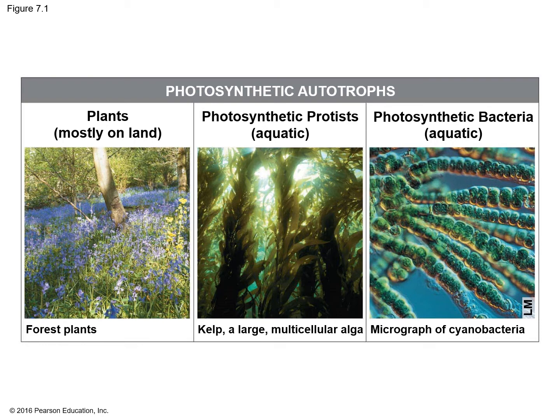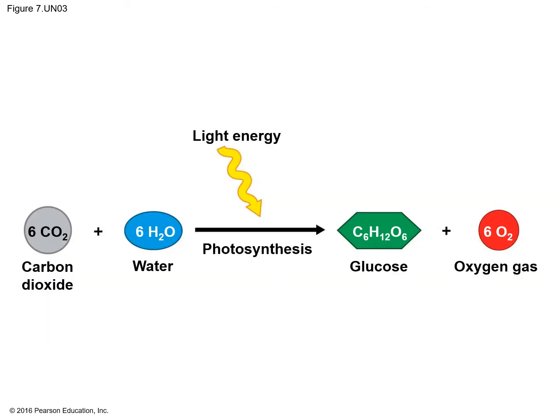Aquatic plants that live underwater are still going to have the ability to make their own food. There are even some bacteria that are known to be photosynthetic because they are also able to make their own food. Organisms that are able to make their own food we refer to as autotrophs.